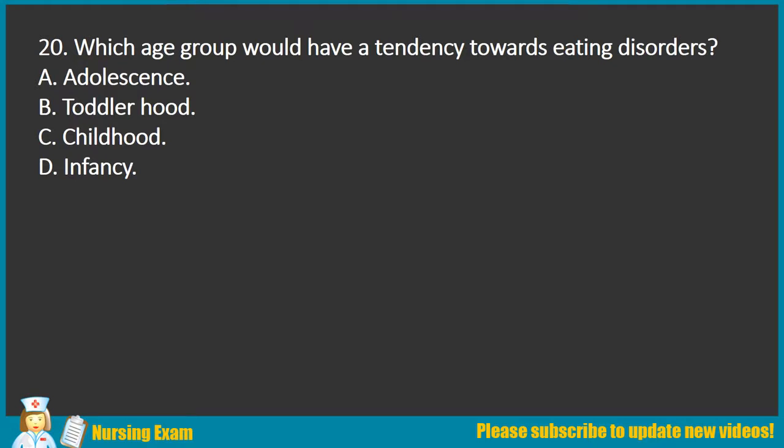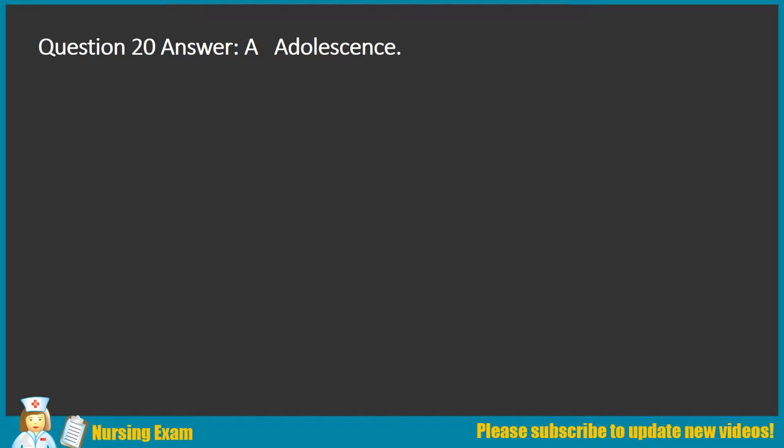Question 20. Which age group would have a tendency towards eating disorders? A. Adolescence. B. Toddlerhood. C. Childhood. D. Infancy. Answer: A. Adolescence.